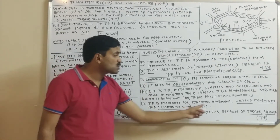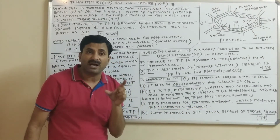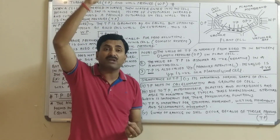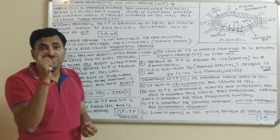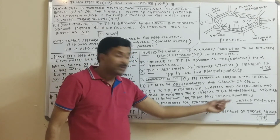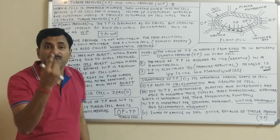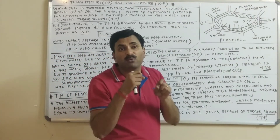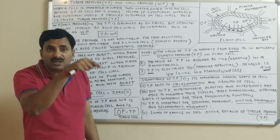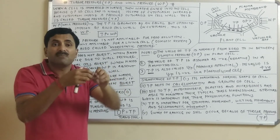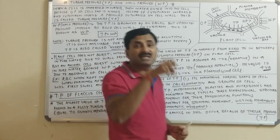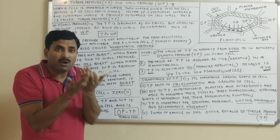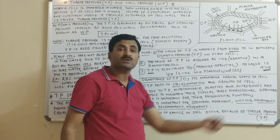TP is also important for stomatal movements — the opening and closing of stomata. Stomata generally open during daytime and close at night, and turgor pressure plays an important role in this process during transpiration. TP is also important for wilting movements. Wilting means the curling of leaves during the daytime due to water loss through high transpiration. When water is deficient, leaves curl, but in the evening, as absorption increases and transpiration decreases, the leaves return to their normal condition.